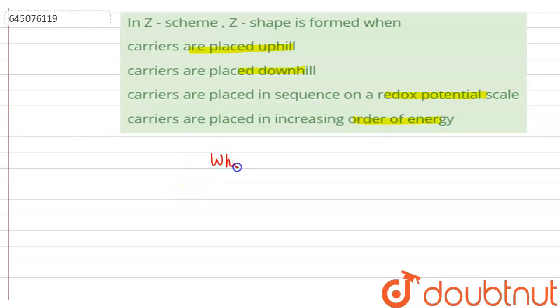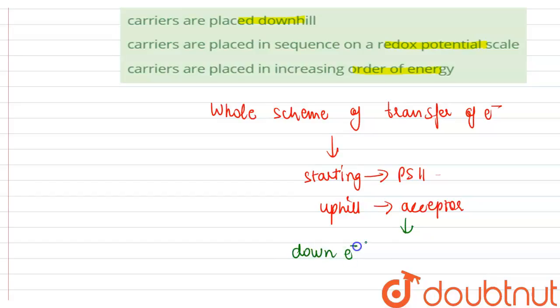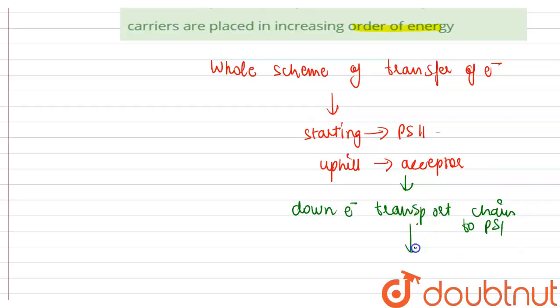whole scheme of transfer of electrons starting from the photosystem second, uphill to the acceptor, down the electron transport chain to photosystem 1 PS1, excitation of electrons,